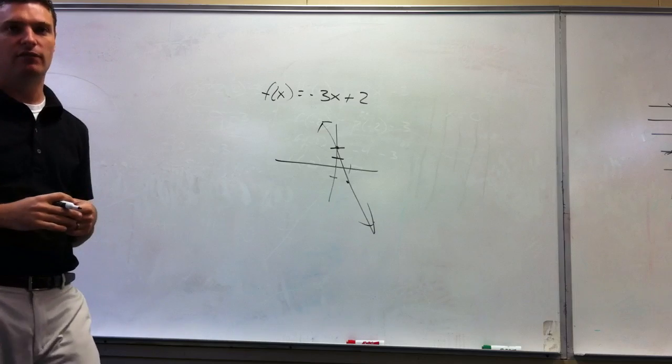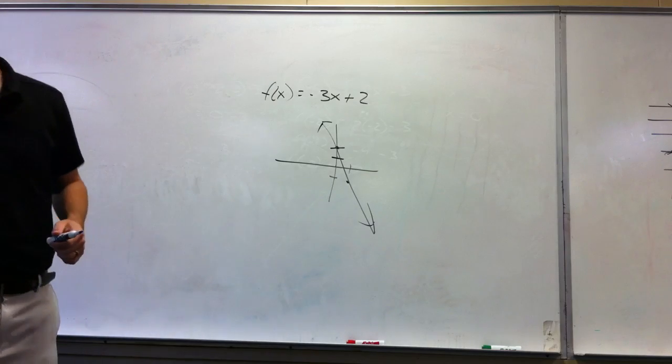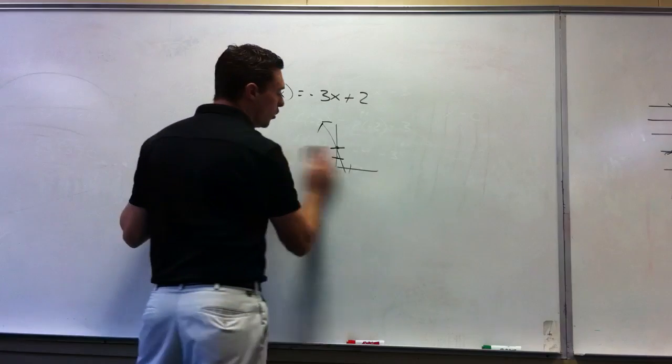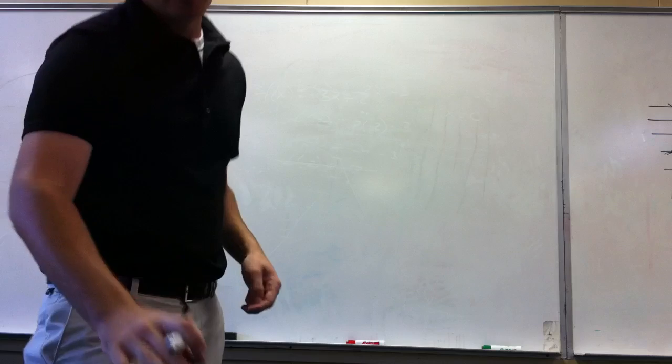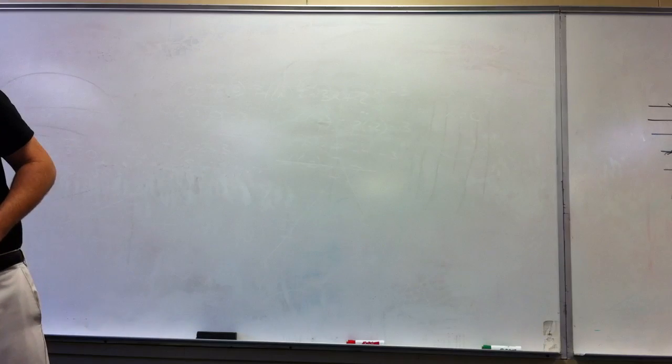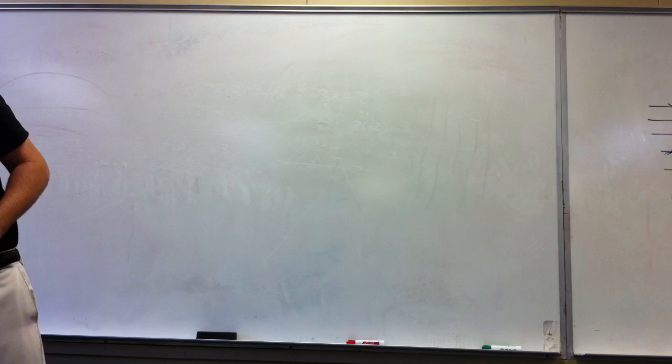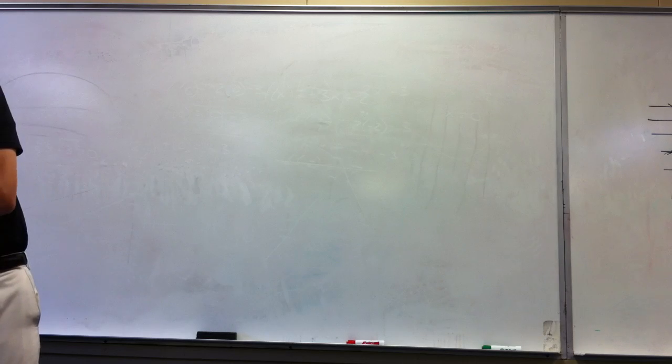So that's how you graph in function notation. The other thing that we want to look at is to ask you to find the slope in function notation. This is a little bit confusing, but I think you guys can handle it. Let me find an example here that we can do. Look at page 260. Let's look at number 42.